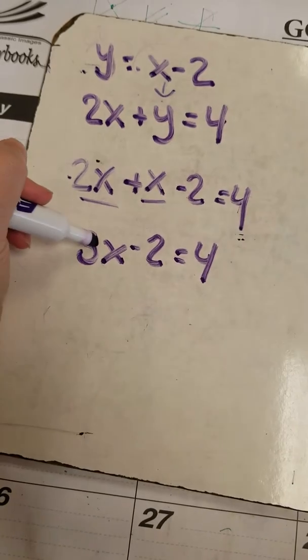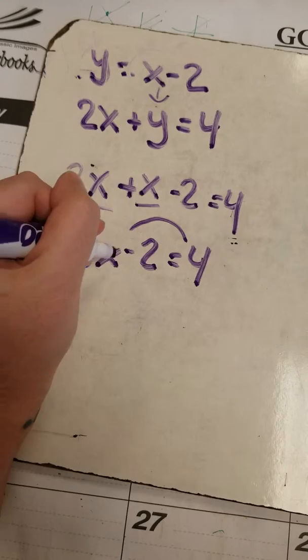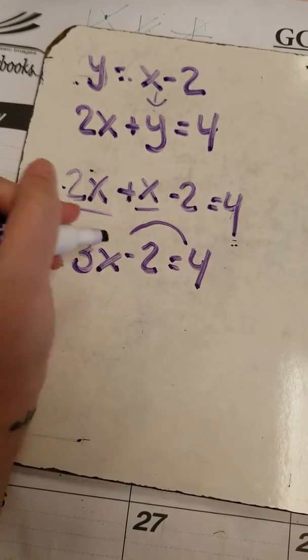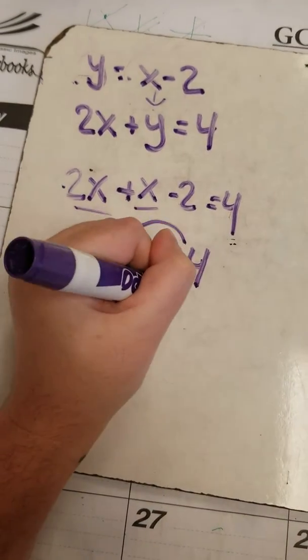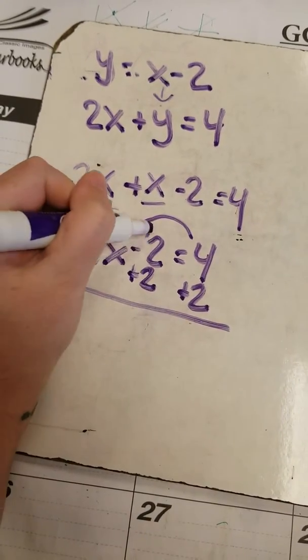I have a variable on one side and a number on another. I need to get this guy over here. I'm trying to get x alone, so I have to get the straggler out first. I'm going to add 2 to each side because this is a negative 2. Adding it will inverse it, getting rid of this.